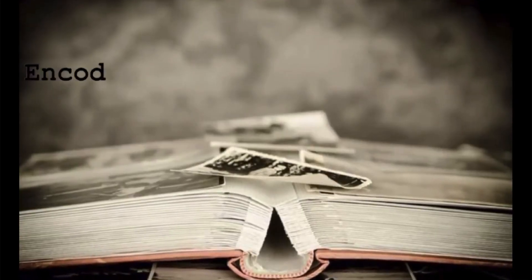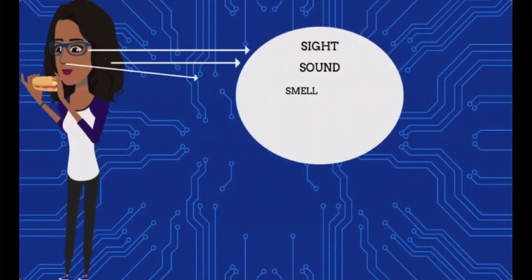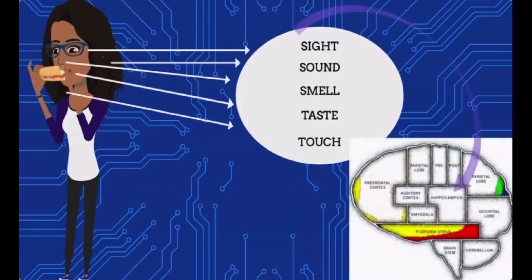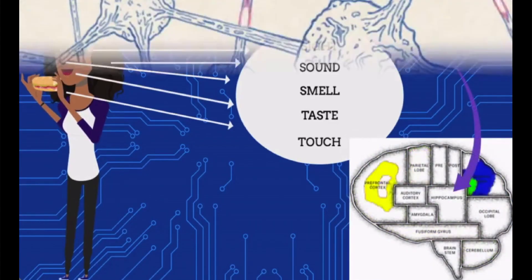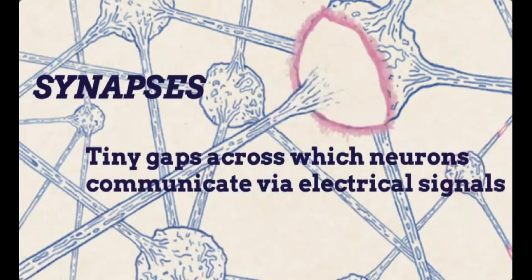Memory is a simple three-step process: encoding, storage, and retrieval. During the encoding step, your brain receives information from each of your senses and passes it on to the hippocampus, where a neural network of synapses compile all of this into a memory.